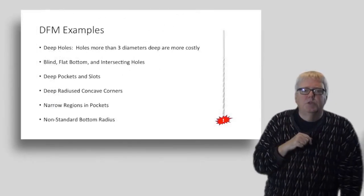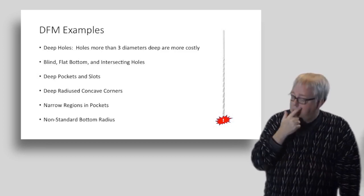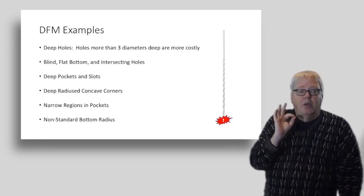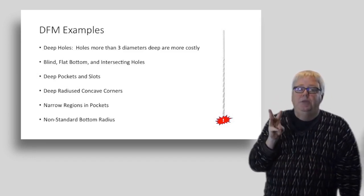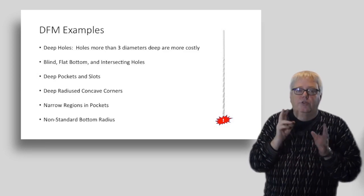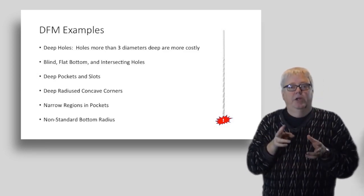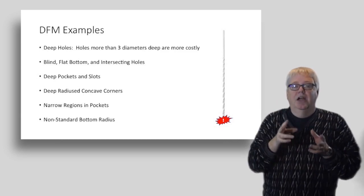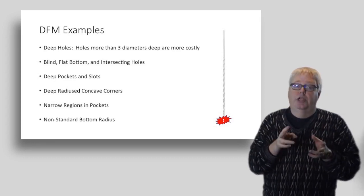Let's go over some specific examples of features on parts that increase costs. Deep holes are a big one. Any time a hole is more than three diameters deep, your costs go up because you need to start using special techniques. The deeper the hole in terms of diameters, the more costly. I just did a CNC chef video that was all about overcoming deep hole challenges if you want to check into that.